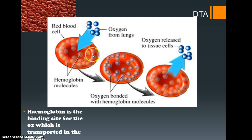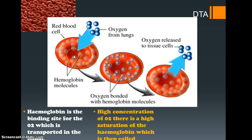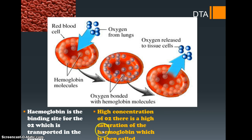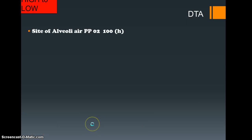As you can see in this diagram, you have your red blood cell within the capillary. The O2 diffuses across the membranes and binds onto the hemoglobin. This usually occurs when we have a high concentration of O2 — the perfect place being in the lungs. When we inhale all that oxygen-rich air, there is a high saturation of hemoglobin, and this is then called oxyhemoglobin.